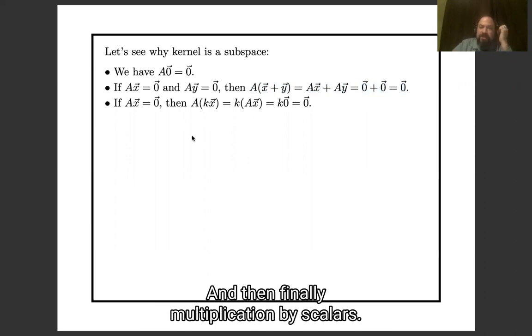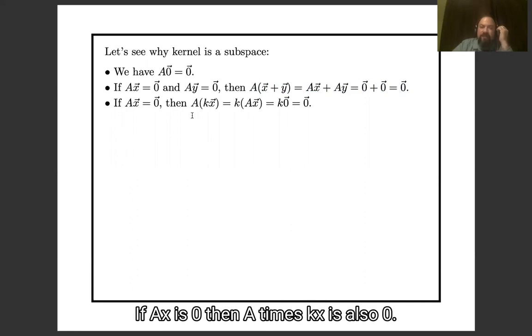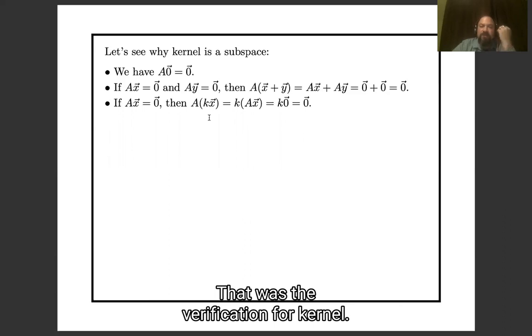And then finally, multiplication by scalars, if Ax is zero, then A times kx is also zero. That was the verification for kernel, let's do the same verification for image.